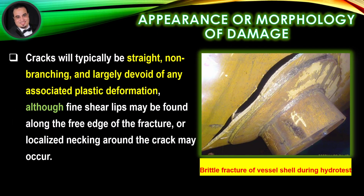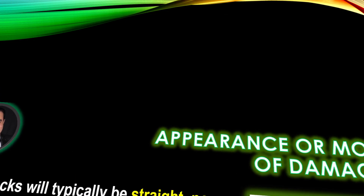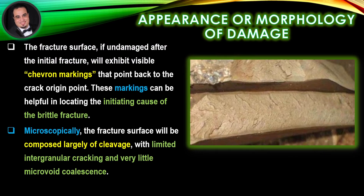Appearance or morphology of damage: cracks will typically be straight, non-branching, and largely devoid of any associated plastic deformation, although fine shear lips may be found along the free edge of the fracture, or localized necking around the crack may occur. The fracture surface, if undamaged after the initial fracture, will exhibit visible chevron markings that point back to the crack origin point. These markings can be helpful in locating the initiating cause of the brittle fracture.